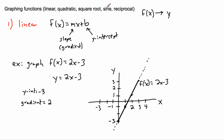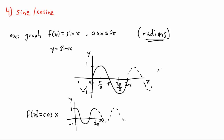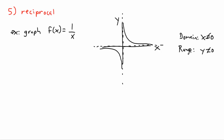So these are the key graphs to know: linear, quadratic, square root, sine, cosine, and reciprocal. These are all very helpful to recognize and sketch without a calculator. They're especially useful later on for doing transformations, so I strongly suggest learning how each of them looks.